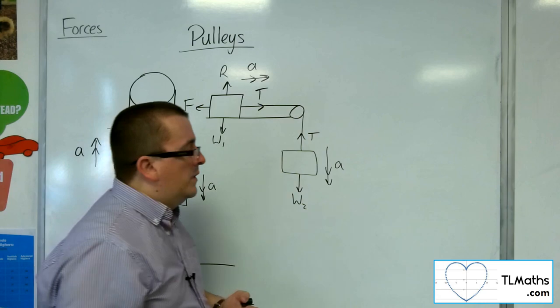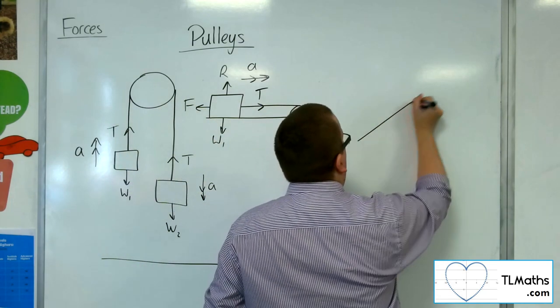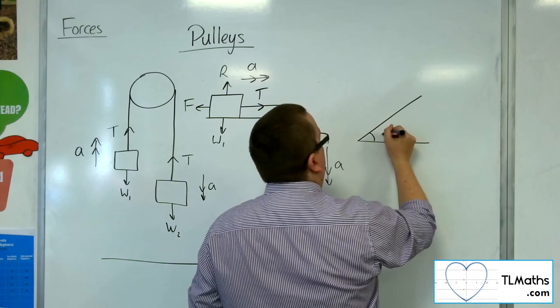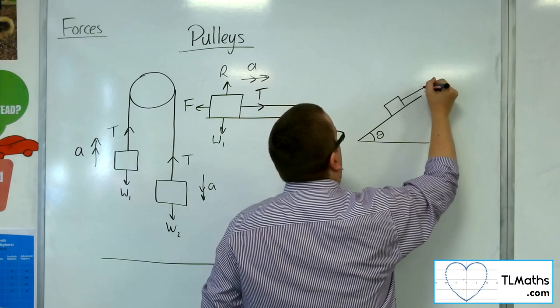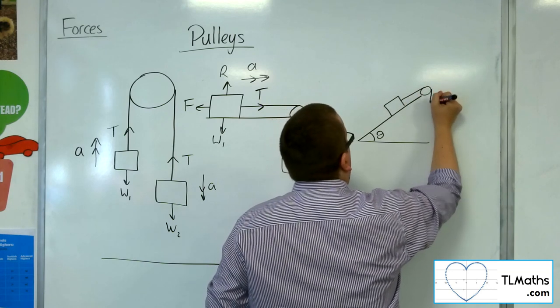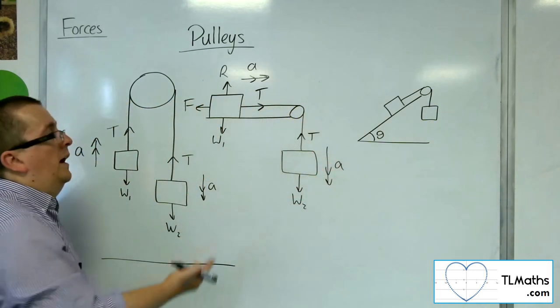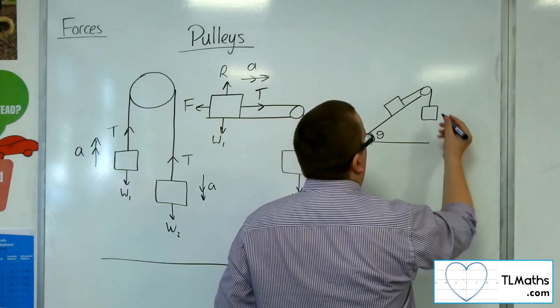If you're studying the full A level, then you're going to have to deal with situations where maybe the particle is on an inclined plane. So at an angle, here is the particle, and maybe there is a pulley here, and then we've got another particle here. It's kind of similar to this situation, but the table is on an inclined, at an inclined angle.